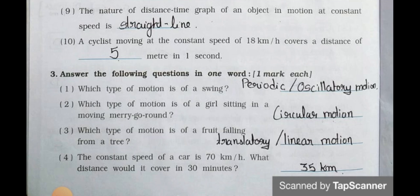Number four: the constant speed of a car is 70 kilometer per hour. What distance would it cover in 30 minutes? Answer is 35 kilometer.